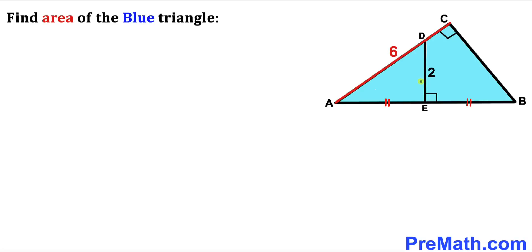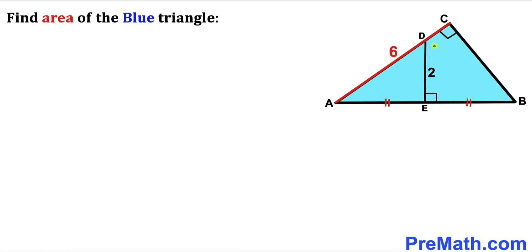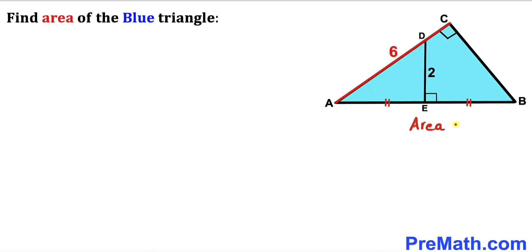Welcome to pre-math. In this video we have got this blue right triangle ABC along with this perpendicular DE, such that side length AC is 6 units, perpendicular DE is 2 units, and segment AE equals segment EB. Our task is to calculate the area of this blue triangle ABC.